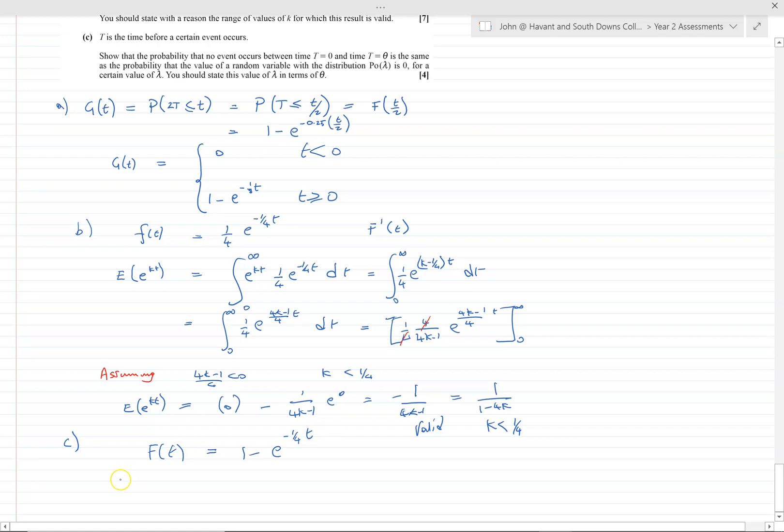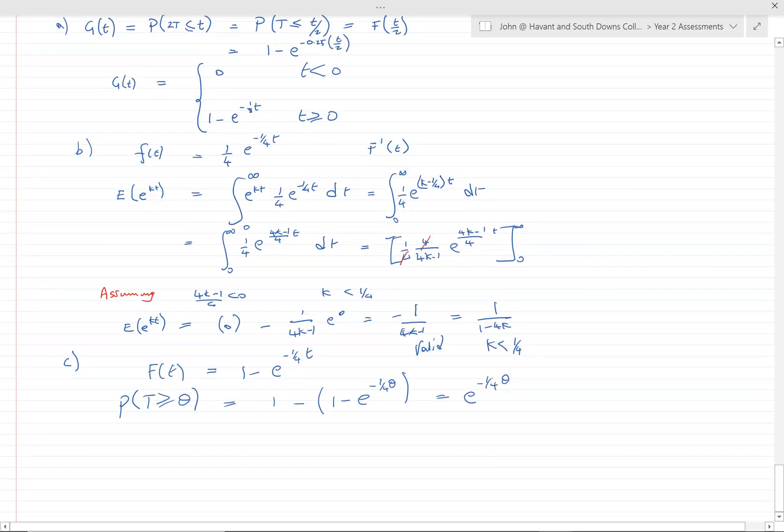Now what we're going to do here is find the probability that T is greater than or equal to θ, and that's equal to 1 minus (1 minus e to the minus quarter θ), which is equal to e to the minus quarter θ.